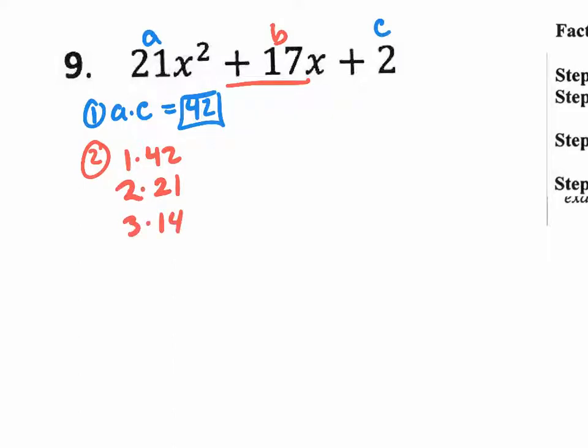3 times 14. 4 times what? Doesn't work. 5 doesn't work. 6 times 7. And that's it. Those are all the different ways of multiplying two numbers to get 42 besides changing signs.